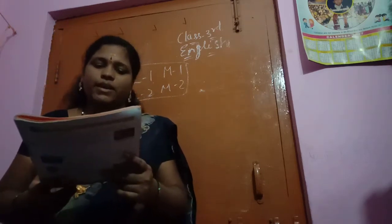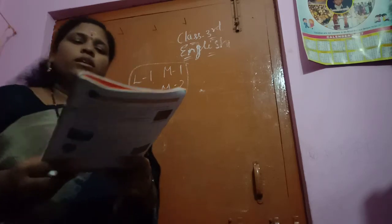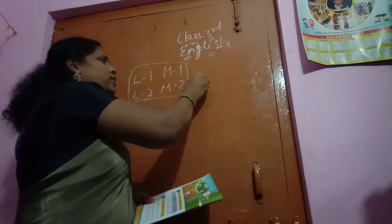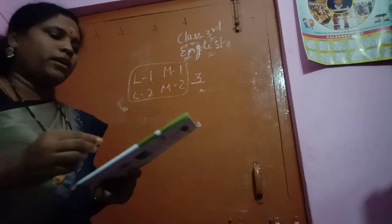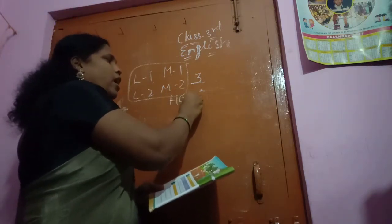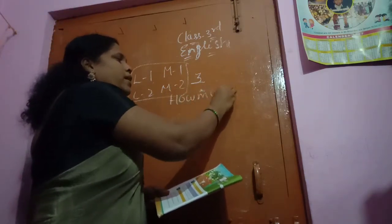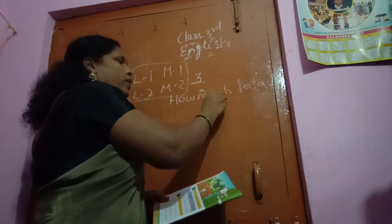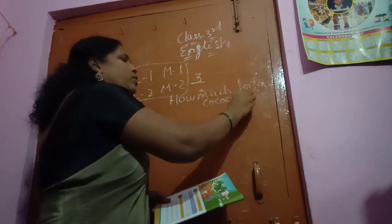Okay children, I will check once. Now we are going to learn the third lesson. What is the third lesson? How much for a coconut? How much for a coconut means — what is the rate of a coconut?